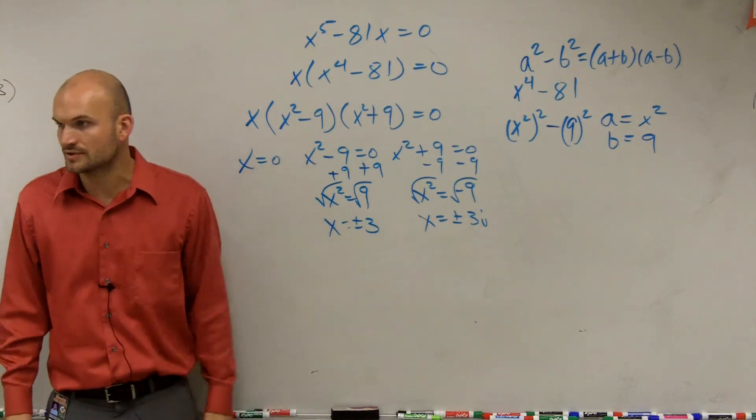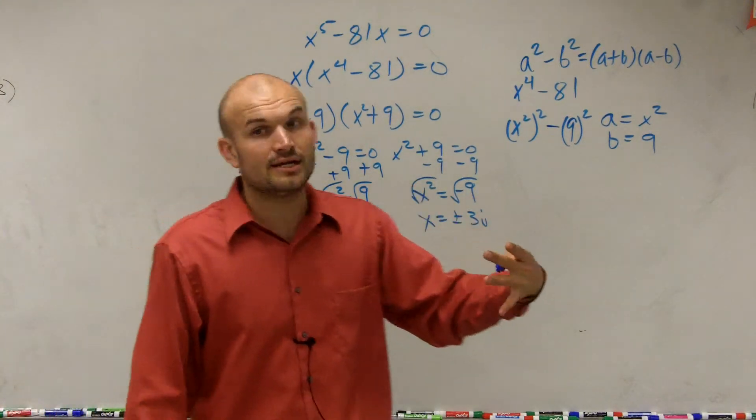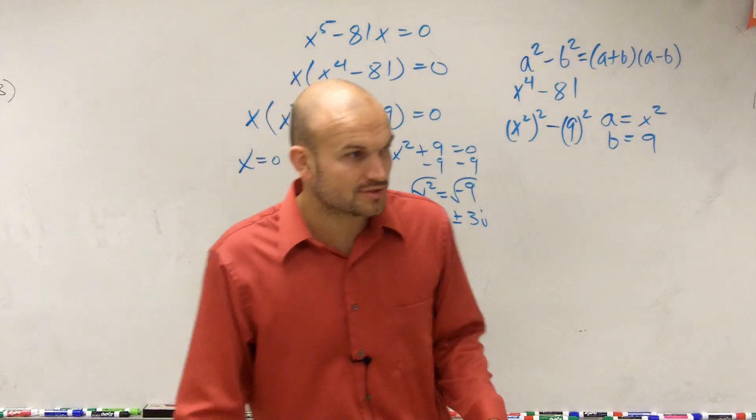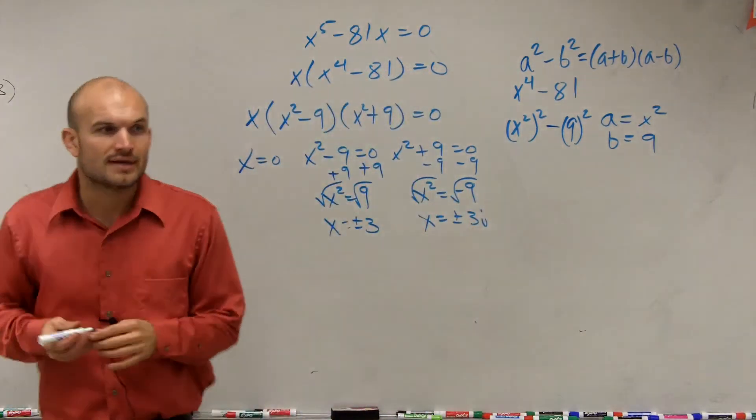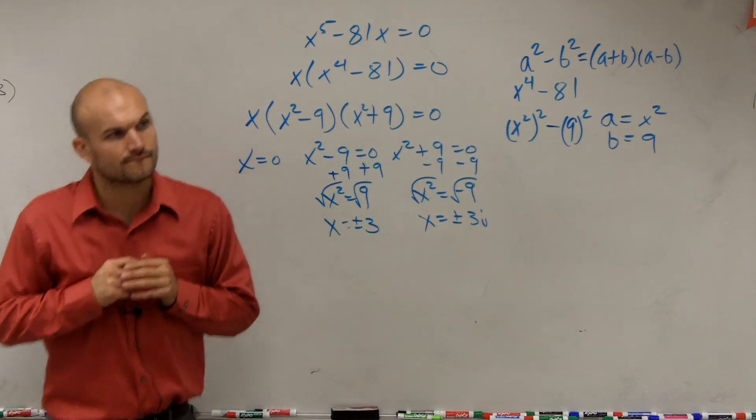x equals 0, because I already solved that. So therefore there are our solutions. I have three real rational roots, and I also have two complex roots, which are stated right there.